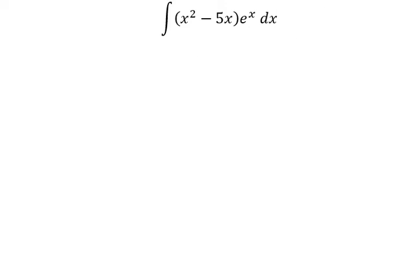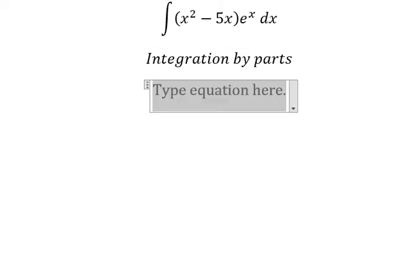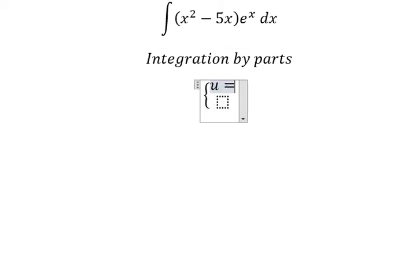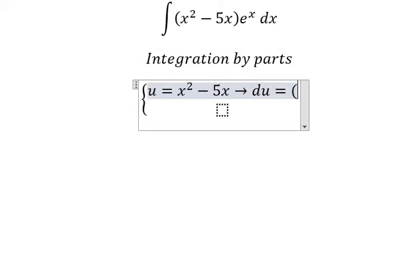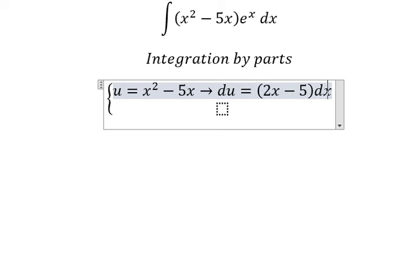We need to use integration by parts. So we have u equals to x squared minus 5x. If we do first derivative for both sides, we have du equals 2x minus 5 dx.